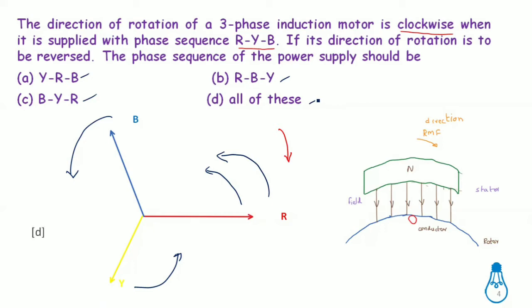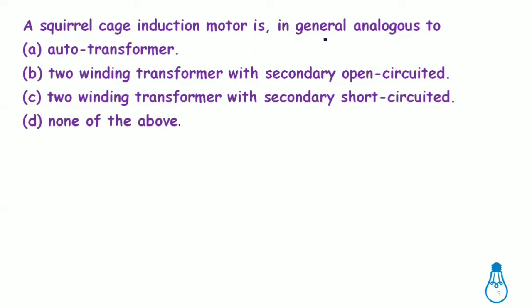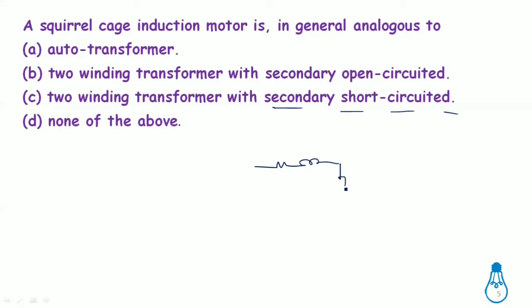The squirrel cage induction motor is in general analogous to a two-winding transformer with the secondary short-circuited. The stator corresponds to the primary and the rotor corresponds to the secondary. In a squirrel cage motor, the rotor copper bars are short-circuited through end rings, so the secondary behaves as short-circuited.